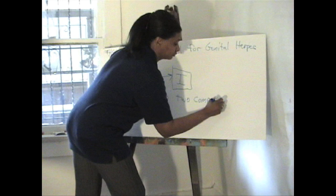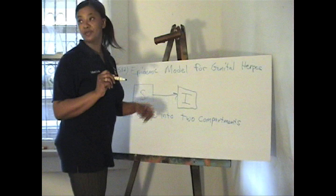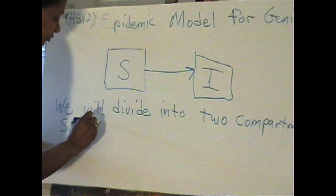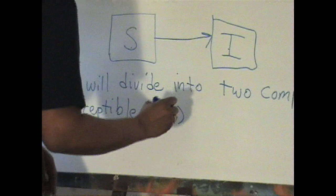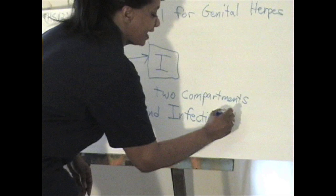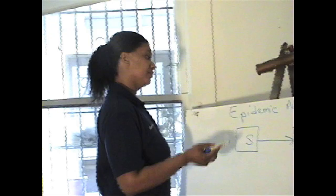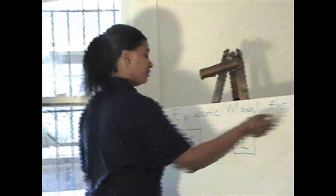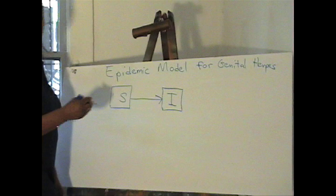As previously mentioned, one of our compartments is going to be Susceptible, S(t), and the other is Infective, I(t). We will have a Gamma S here in the middle, and then we will make our assumptions for our model.